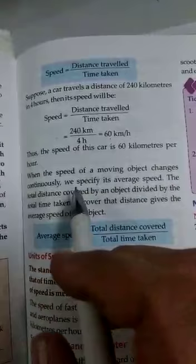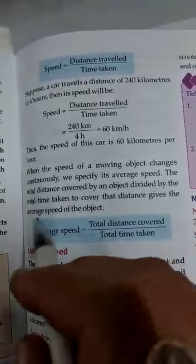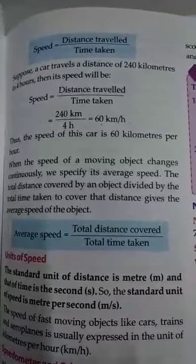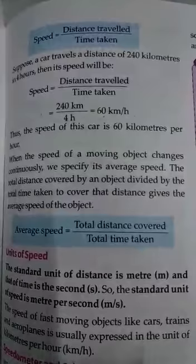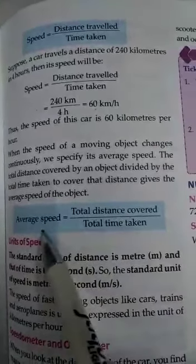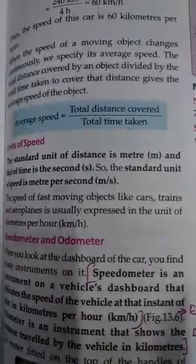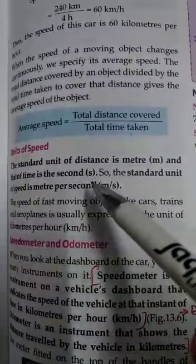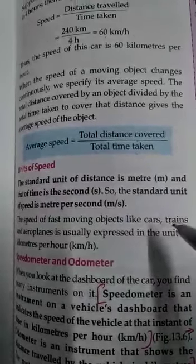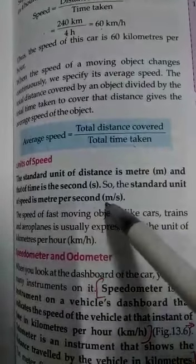When the speed of a moving object changes continuously, we specify its average speed. The total distance covered by an object divided by the total time taken to cover that distance gives average speed of the object. Jab speed change hoti rehti hai, hum average speed nikalte hain. Jab speed kya hai, distance kya hai meter mein, time hai second mein, to isse speed ka formula, usko hum unit kya hogi: meter per second.